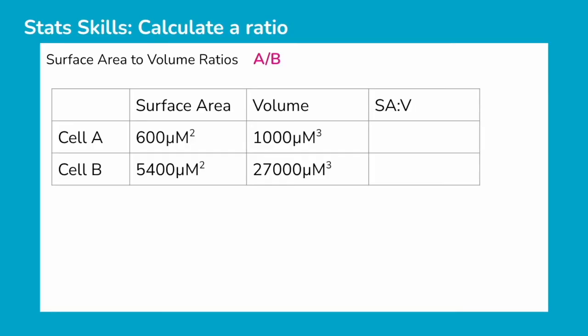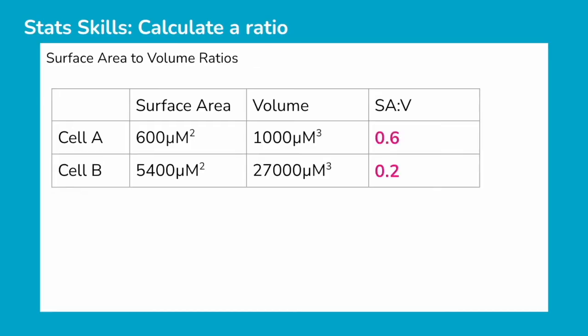If we just look at these two cells, what we want to do is see which one has the greatest surface area to volume ratio, and that'll be the cell that is more efficient. In this case, it's already given the surface area and volume, so you don't have to calculate those separately. But to calculate the ratio, we just divide our first value by our second value. So in this case, that's 600 divided by 1,000 to give us 0.6, and then for cell B, that's 5,400 divided by 27,000 to give us 0.2. In this case, cell A has the greater surface area to volume ratio, and so it is more efficient at exchanging materials.